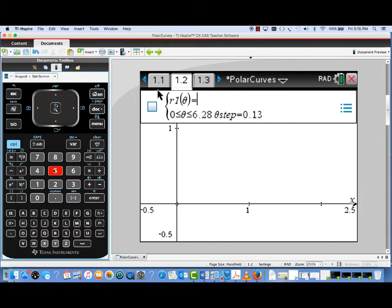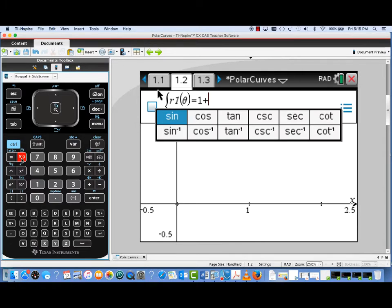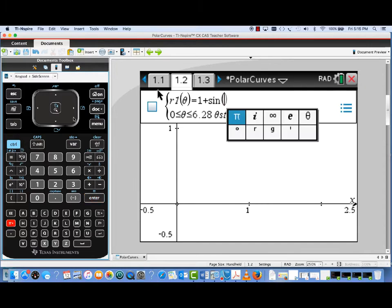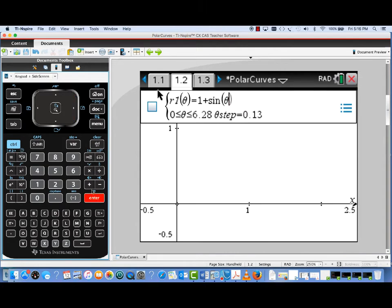Now we're presented with formulas of the form R of Theta. So for our first curve, R1 of Theta, we're going to use a curve that was featured in the 2017 BC exam, question 2.